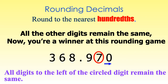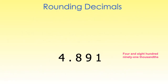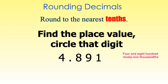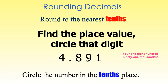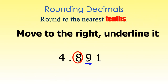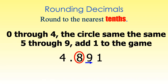Let's try rounding this decimal. This decimal is four and eight hundred ninety-one thousandths, and we want to round this to the nearest tenths place. Find the place value and circle that digit — circle the number in the tenths place. The digit in the tenths place is the digit eight. Now we move to the right and underline it. The digit to the right of the circled digit eight is the digit nine. We now analyze the digit nine.